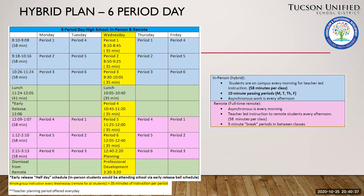One other general thing to note is that students colored blue are opting to attend school in person and will be expected to work on the classes they don't see in the mornings asynchronously in the afternoons. Similarly, students following the pink periods are opting to attend remotely and will be expected to do asynchronous work every morning for the classes they won't be seeing in the afternoons.